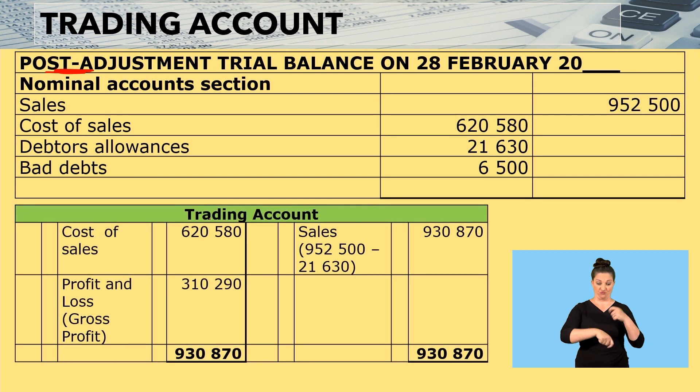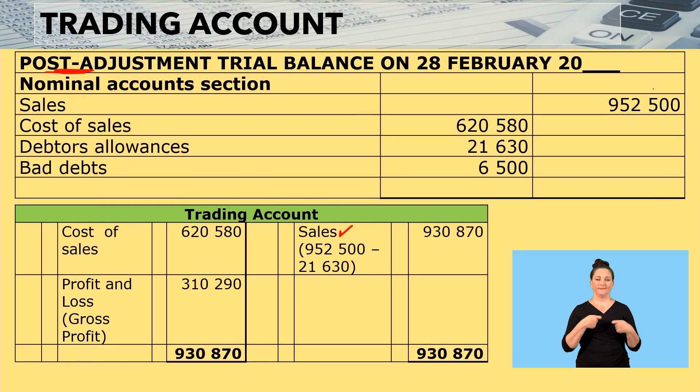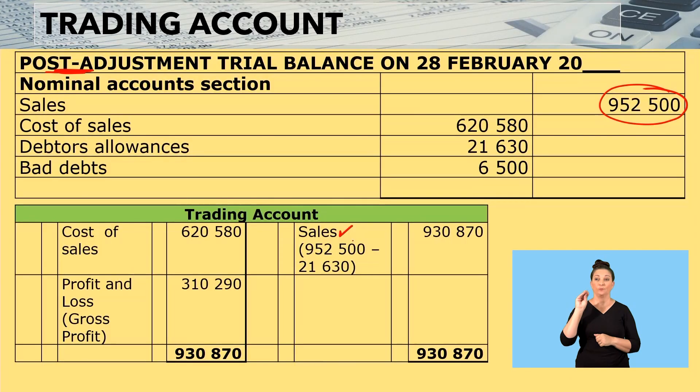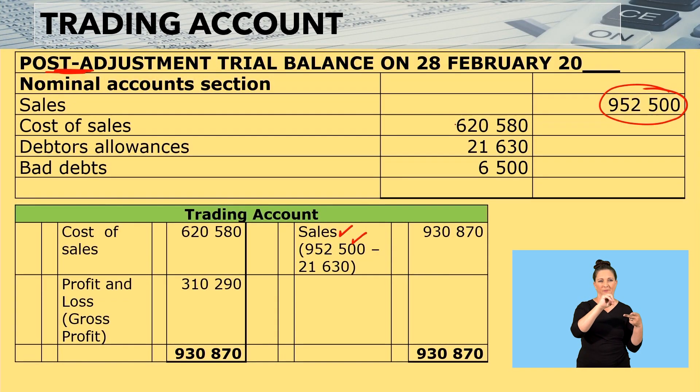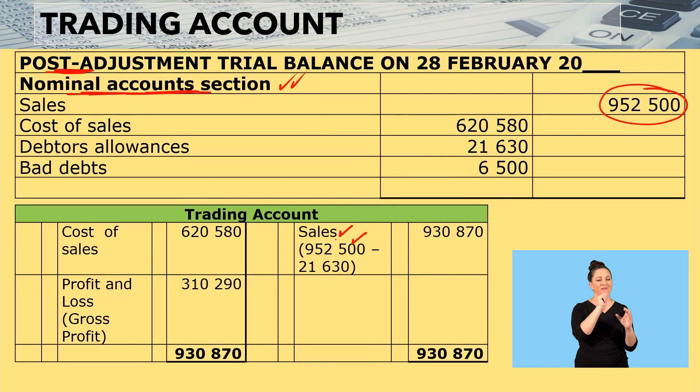Here is my trading account. The first thing I will have in my trading account is sales. One of the most important things to remember is that when you are preparing a trading account, you will get your information from the nominal accounts section of the trial balance — not the balance sheet accounts section, but the nominal accounts section.